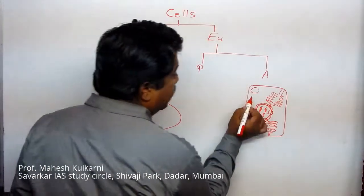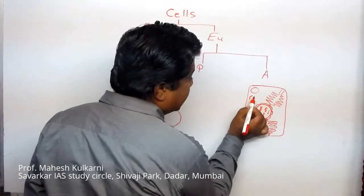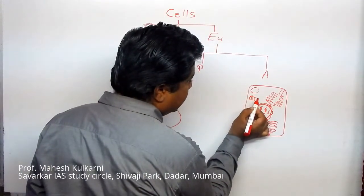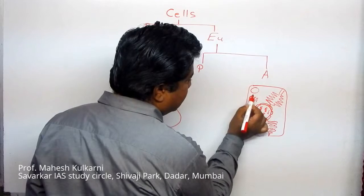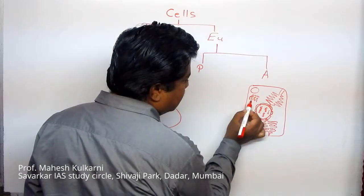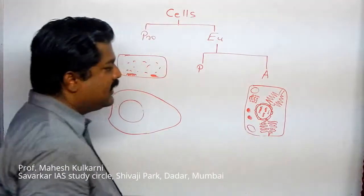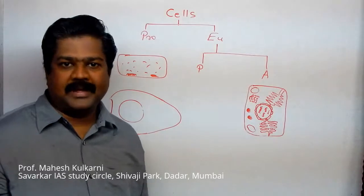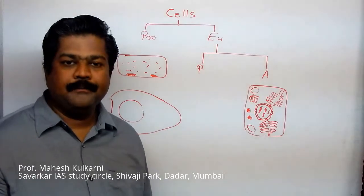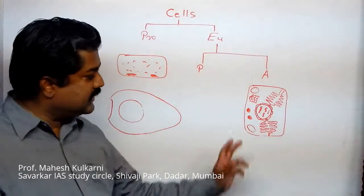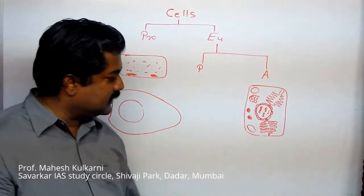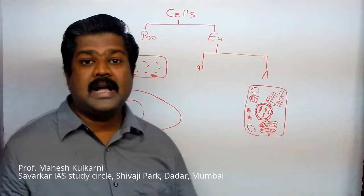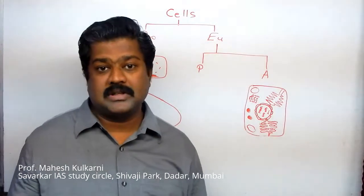Then we are having certain disc-shaped structures with some bubble-like appearance along with that — we call that the Golgi complex. These types of structures are present, though I am not showing all the structures present. Keep in mind that all structures are not visible at a time in the cell.